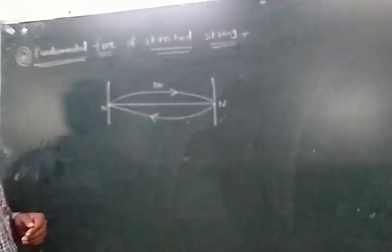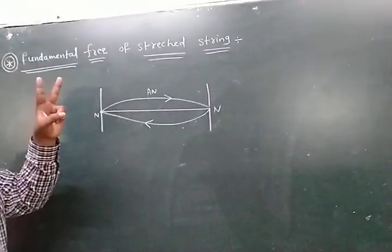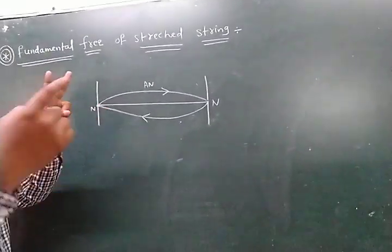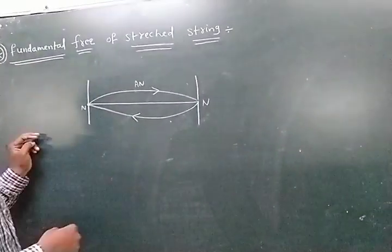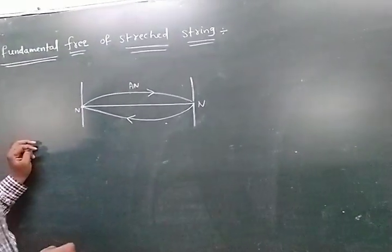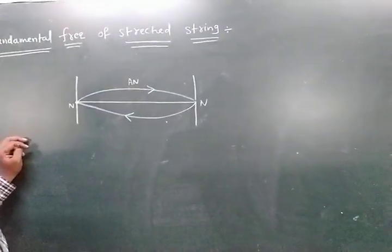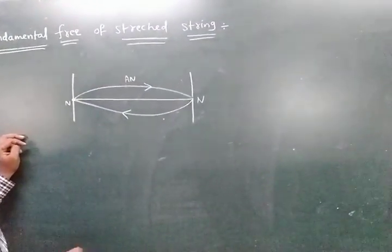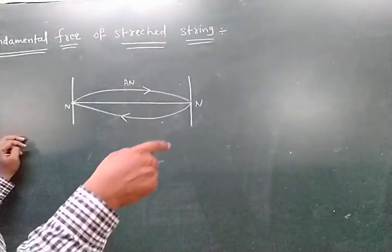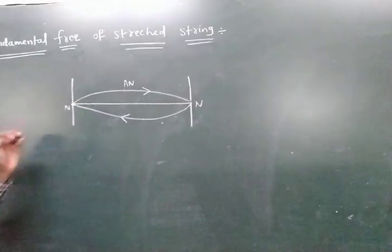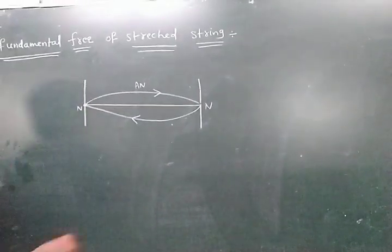In two loops, there are two antinodes and three nodes. In three loops, there are three antinodes and four nodes. And so on.